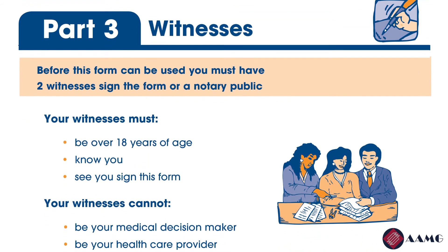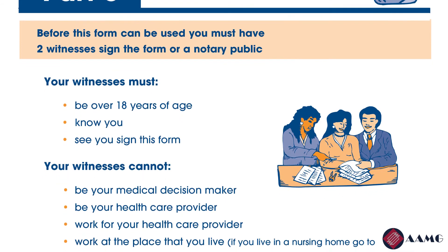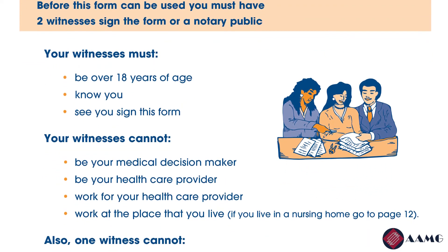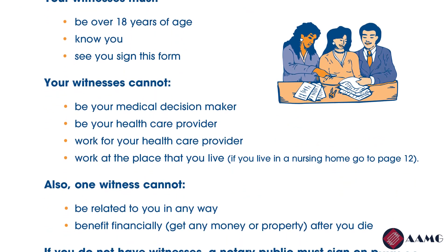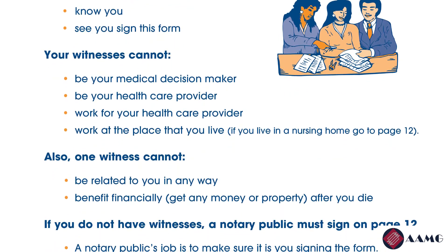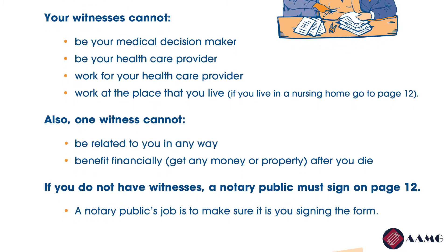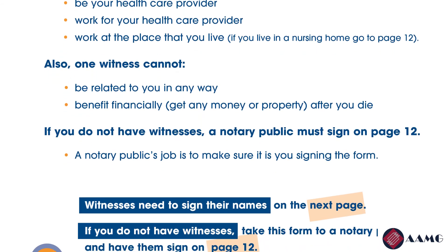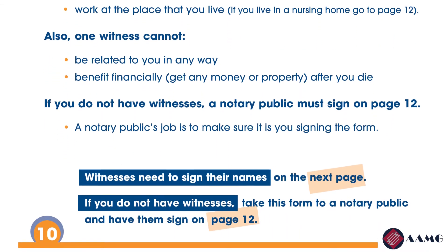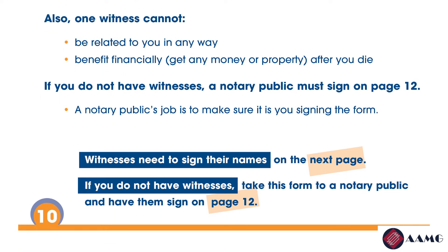Page ten explains the requirements for who your witnesses can be. To qualify, your witnesses must be over 18 years old and must see you sign this form. Your witnesses cannot be your medical decision maker, your healthcare provider, someone who works for your healthcare provider, or someone who works at the place where you live. Also, one witness cannot be related to you in any way or benefit financially — such as receiving money or property after you die. If you do not have witnesses, a notary public must sign on page 12.